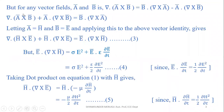For any vector fields A̅ and B̅, we have the identity: ∇ · (A̅ × B̅) = B̅ · (∇ × A̅) − A̅ · (∇ × B̅). Taking the term A̅ · (∇ × B̅) to the left side, we get ∇ · (A̅ × B̅) + A̅ · (∇ × B̅) = B̅ · (∇ × A̅).